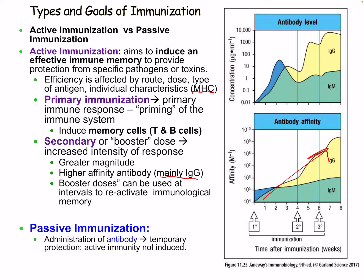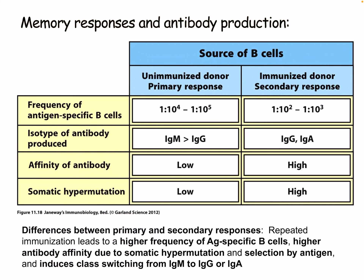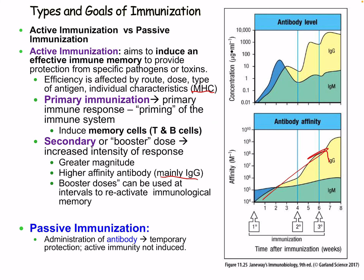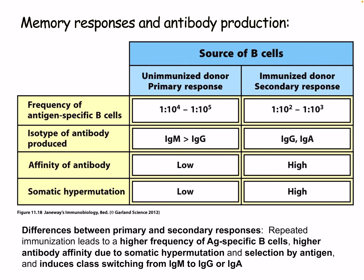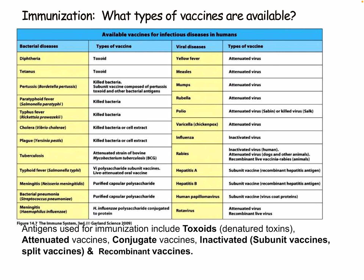Passive immunization is the administration of antibodies, which involves temporary protection without inducing active immunity. This is seen in conditions where you can be injected with certain antibodies to attack specific pathogens, but you don't get that immunological memory. This also occurs naturally: certain immunoglobulins pass through the placenta to the fetus during pregnancy, though this doesn't give permanent immunity — it lasts only for several months. Repeated immunization leads to higher frequency of antigen-specific B cells, higher antibody affinity through somatic hypermutation and selection, and class switching from IgM to IgG or IgA.